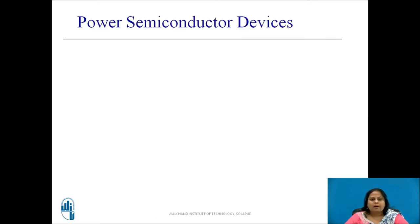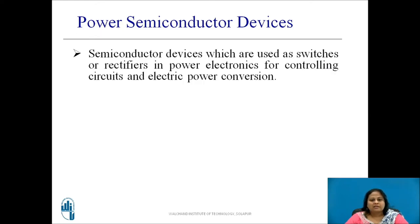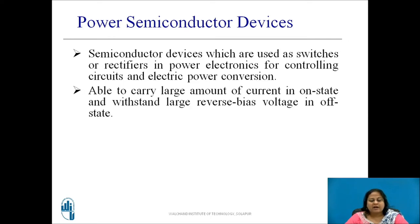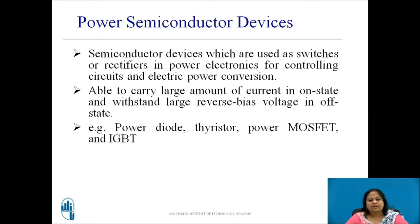Let us now discuss what power semiconductor devices are. Power semiconductor devices are those semiconductor devices which are used as switches or rectifiers in power electronic applications for controlling purpose and also for electric power conversion. These devices are able to carry a large amount of current during their ON state and can withstand large reverse bias voltage in OFF state. Some examples are power diode, thyristor, power MOSFET, and IGBT.